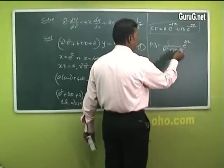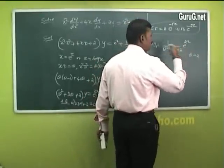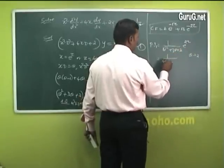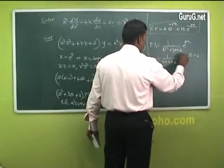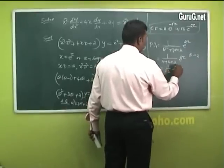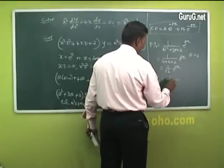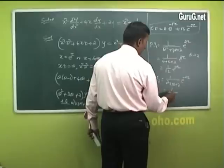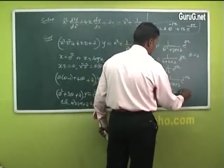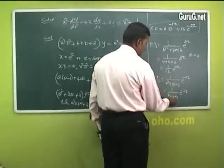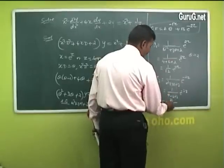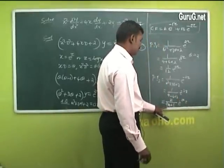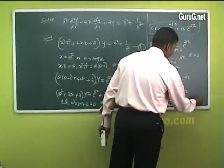Replacing θ by 2: PI₁ = (1/(4 + 6 + 2)) e²ᶻ = (1/12) e²ᶻ. For PI₂ = (1/(θ² + 3θ + 2)) e⁻²ᶻ, replacing θ by -2 gives denominator = 4 - 6 + 2 = 0. Since the denominator is zero, multiply by z in the numerator and differentiate the denominator: differentiated denominator is 2θ + 3. Substituting θ = -2 gives 2(-2) + 3 = -1, so PI₂ = -ze⁻²ᶻ.